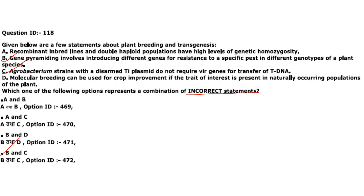Next: statements about plant breeding and transgenics. Recombinant inbred lines and double haploid populations have high levels of genetic homozygosity — correct. Gene pyramiding involves introducing different resistance genes into the same plant species, not different genotypes — so B is incorrect. Agrobacterium strains with disarmed Ti plasmid DO require vir genes for T-DNA transfer — so C is incorrect. Molecular breeding can be used for crop improvement if the trait is in naturally occurring populations — correct. Incorrect options are B and C; answer is option 4.